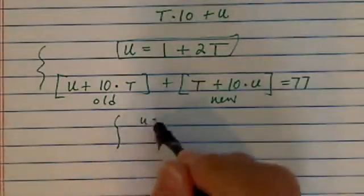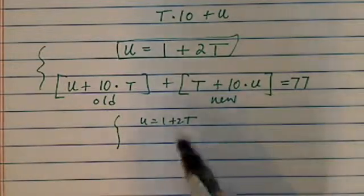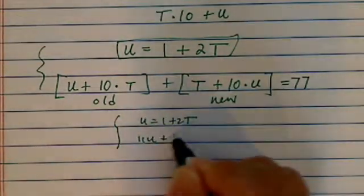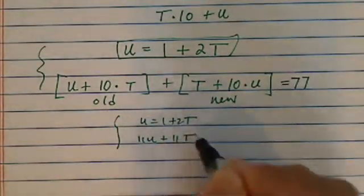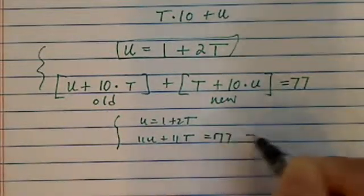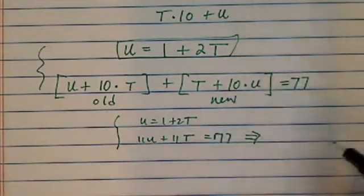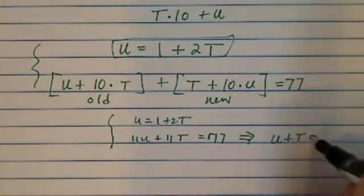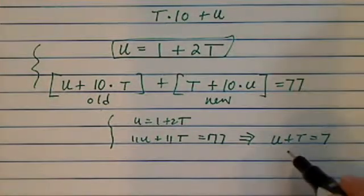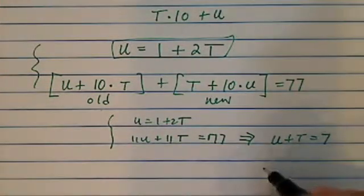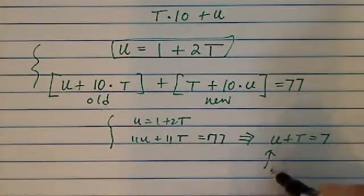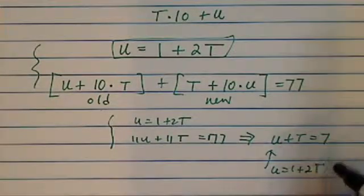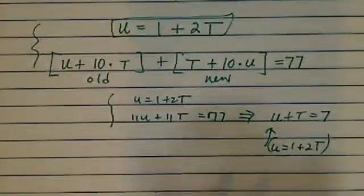So you have U equal to 1 plus 2T. And from the second equation you get 11U plus 11T equal to 77, which simplifies to U plus T equal to 7. Now because U is equal to 1 plus 2T, let's substitute that in.